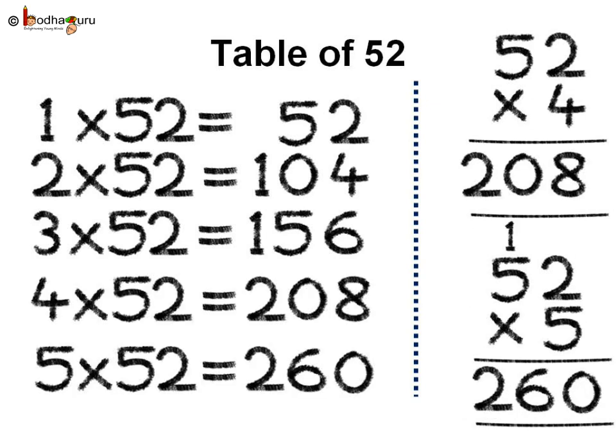Next, 52 into 4. 4 twos are 8, 4 fives are 20. So 4 times 52 is equal to 208. Next, 52 into 5. 5 twos are 10, carry over 1. 5 fives are 25 plus 1. So it is equal to 260. Thus, 5 times 52 is equal to 260.